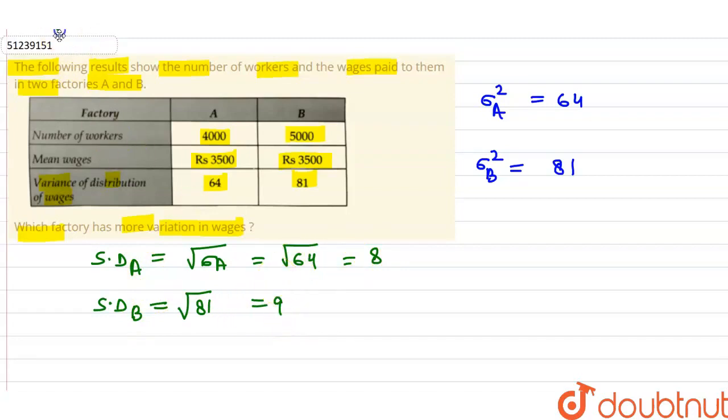If we look at this, the mean wages are the same in both factories. But the standard deviation of factory B has more value. So, we can write like this: therefore factory B has more variation in wages than A.